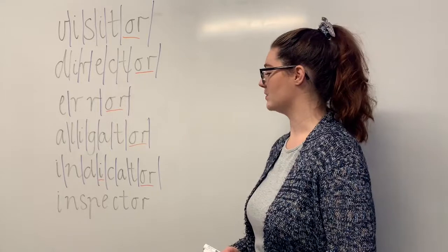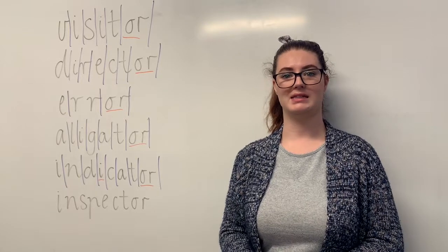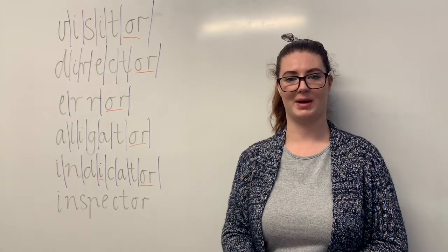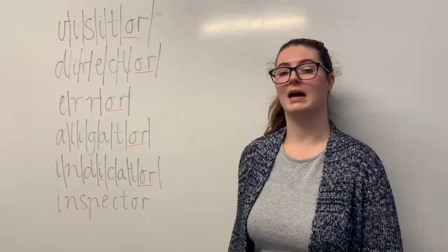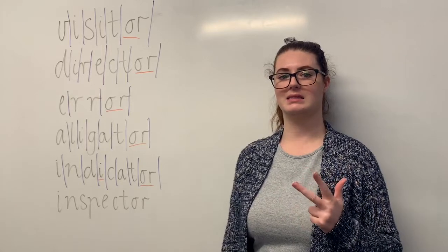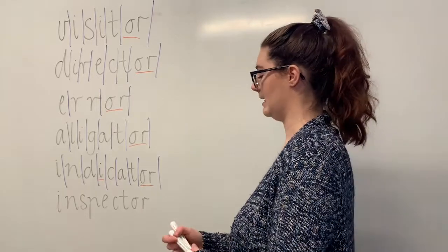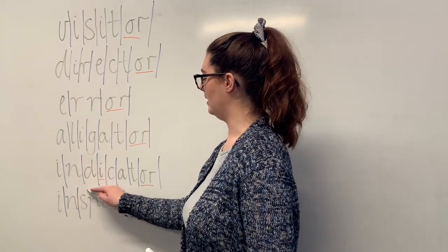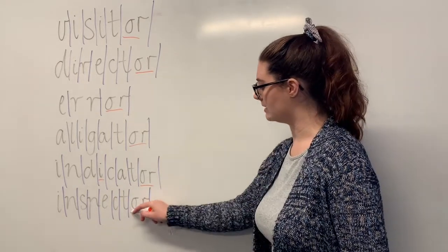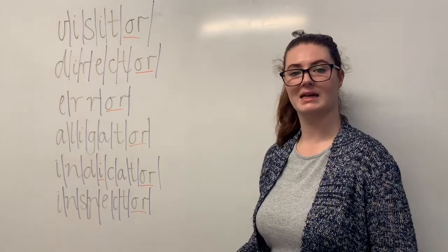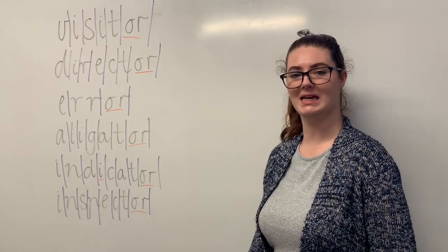And our last orange word is inspector. Say inspector. When travelling on public transport, an inspector could get on to check if your Myki has enough money on it to allow you to travel into the city. The sounds in inspector are together: I-N-S-P-E-C-T-O-R. The letters in inspector are I-N-S-P-E-C-T-O-R. The part we need to remember is the OR digraph making the schwa sound. Inspector. I-N-S-P-E-C-T-O-R.